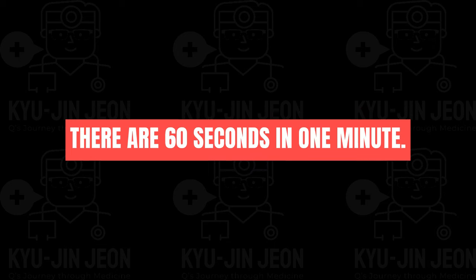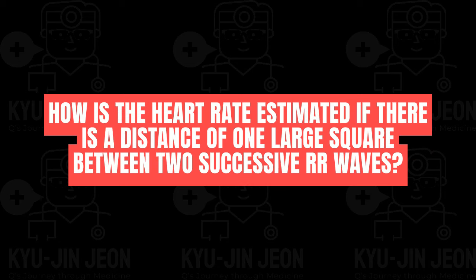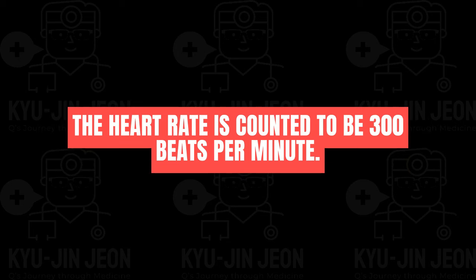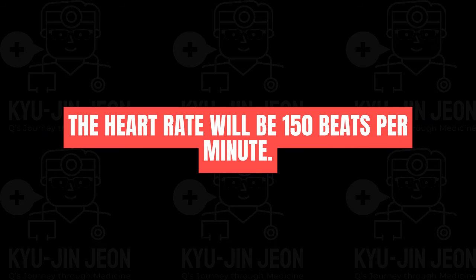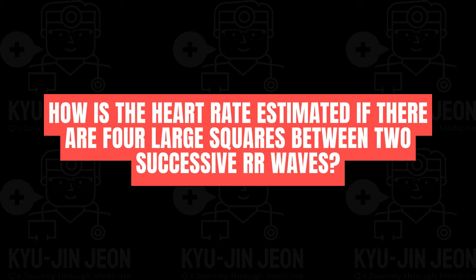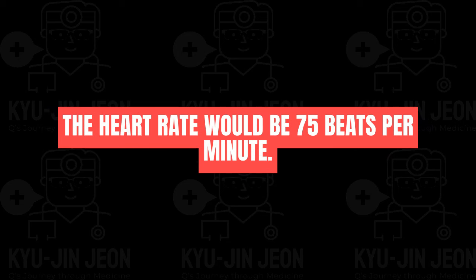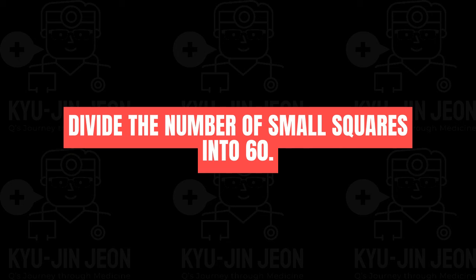There are 60 seconds in one minute. If the heart rate is 75 beats per minute, the distance between two successive RR waves is 20 small squares. Heart rate can be estimated from large squares between RR waves: 1 large square = 300 bpm, 2 = 150 bpm, 3 = 100 bpm, 4 = 75 bpm. The formula is to divide the number of small squares into 60.